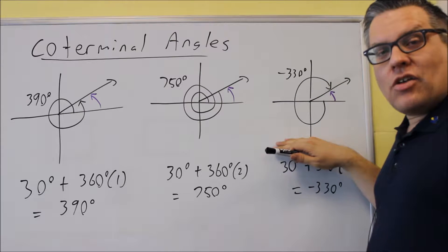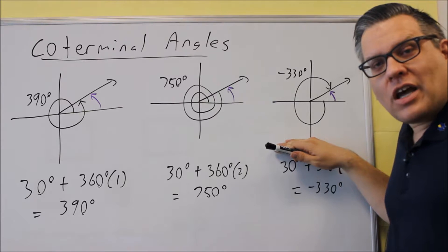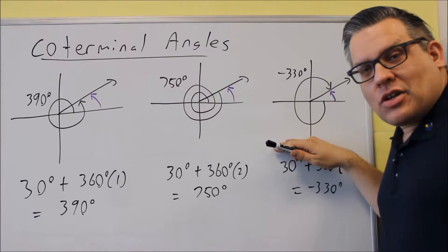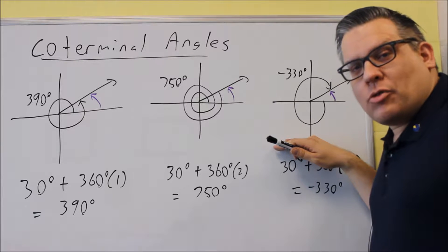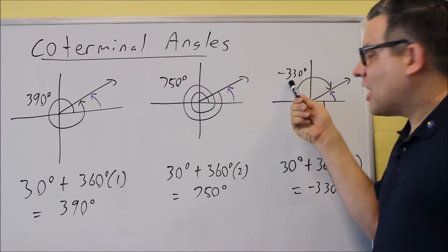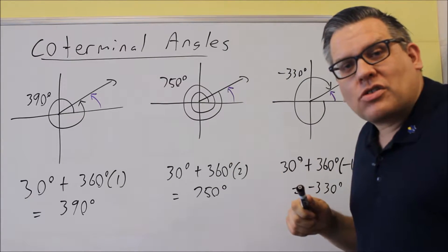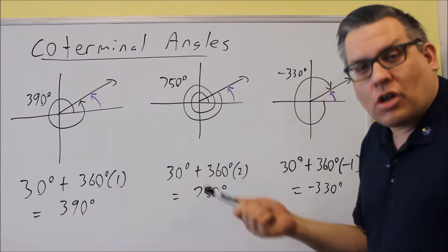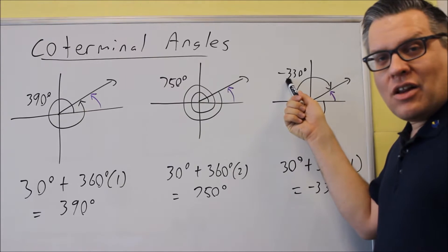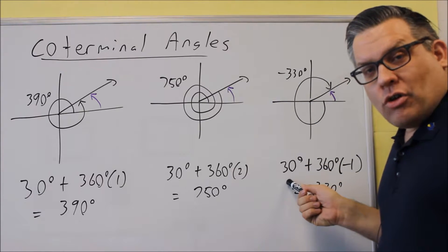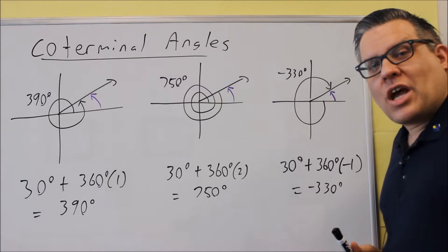If they give you a negative angle like negative 330 and want an angle coterminal to it, since the answer needs to be a positive angle, you keep adding 360 until you get an angle between 0 and 360. So if you get a negative angle, keep adding 360; if you get a positive angle, keep subtracting 360. For negative 330, add 360 and you get 30 degrees. That's the basics of how coterminal angles work — now let's jump into the examples.